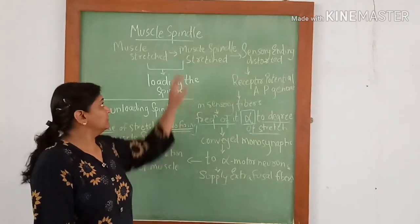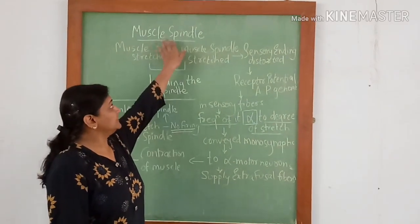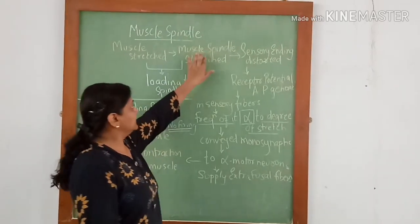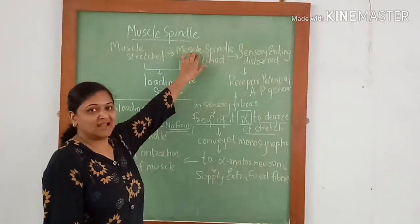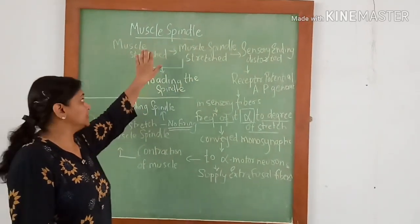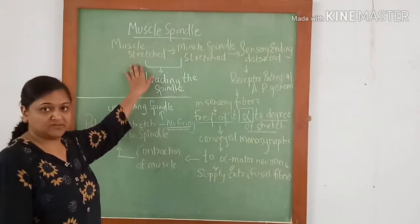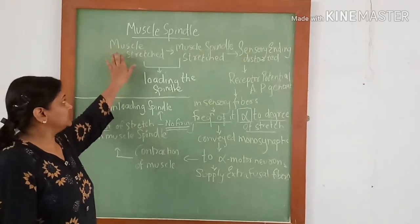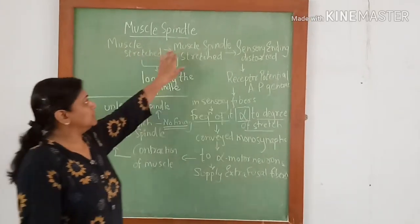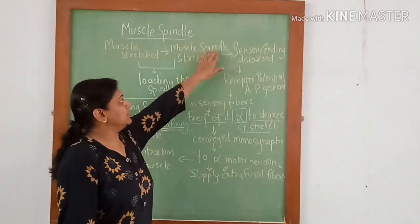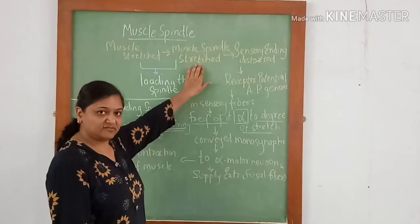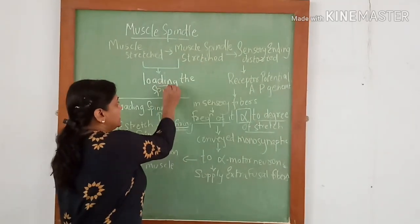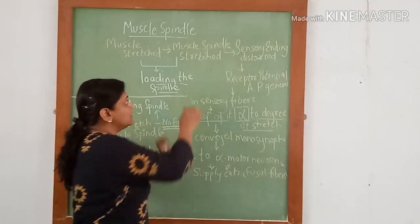Good morning all. Today we will discuss certain features of muscle spindle. The muscle spindle lies parallel to the extrafusal fibers of the muscle. So whenever this muscle is stretched, the muscle spindle also gets stretched. This is known as loading of spindle.